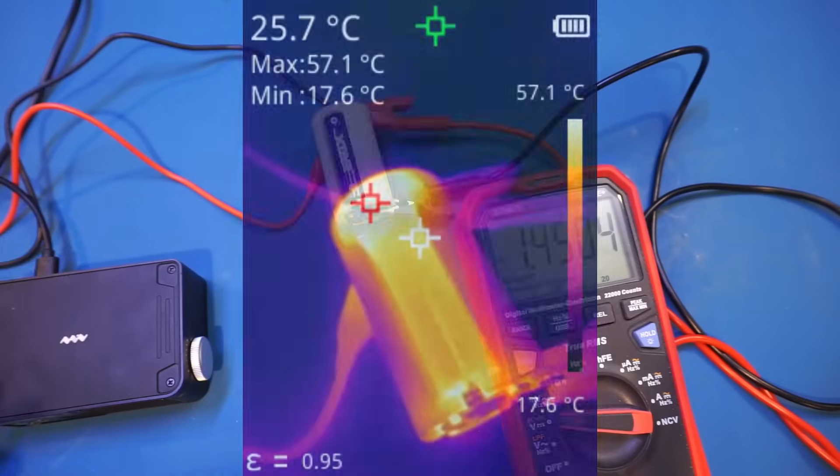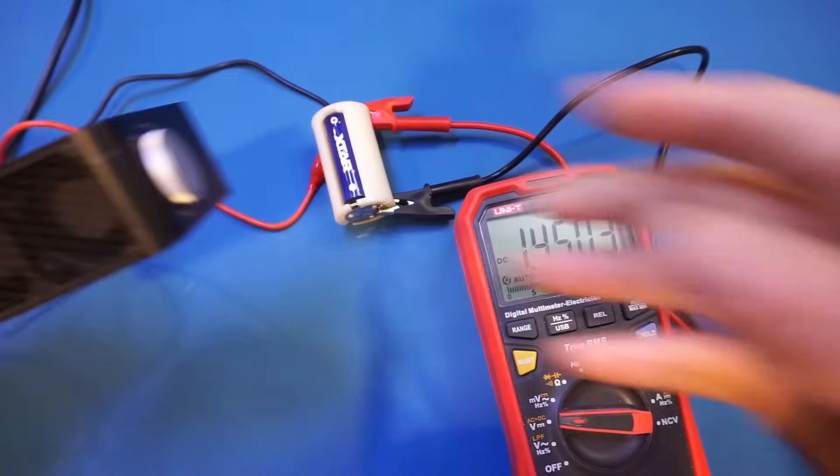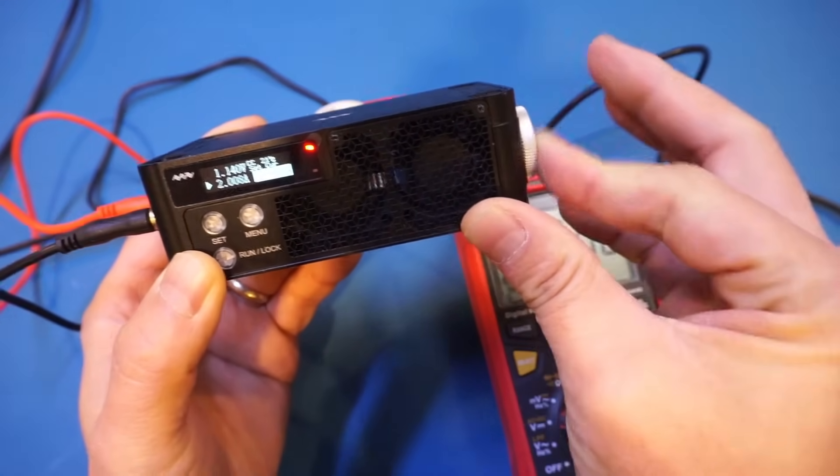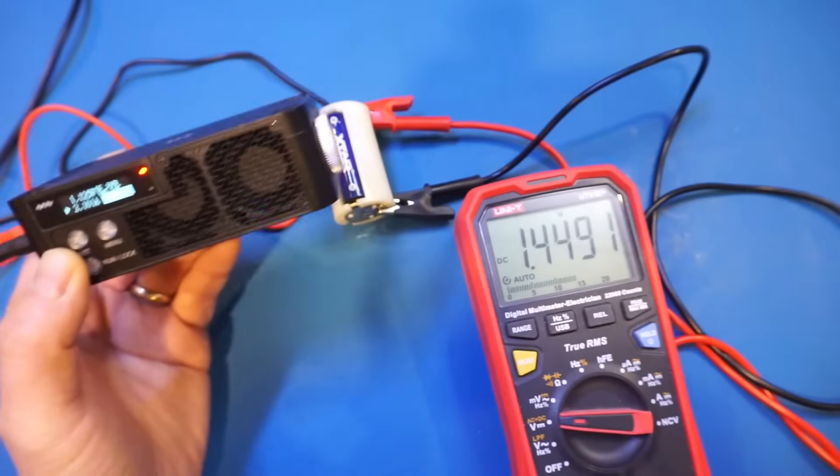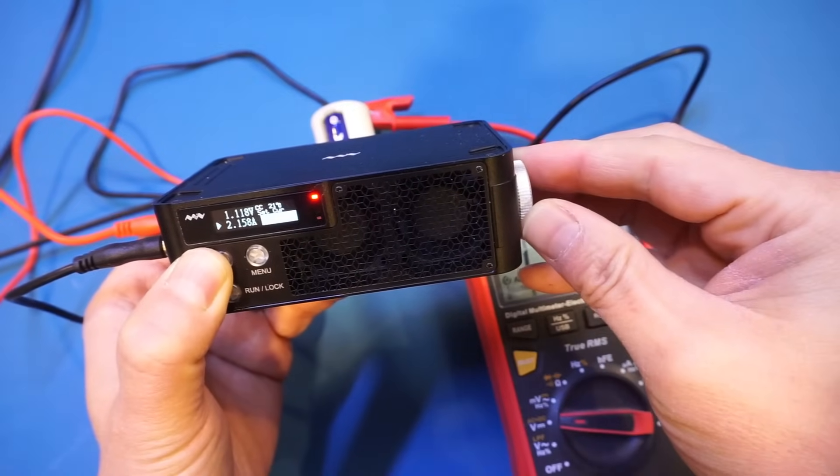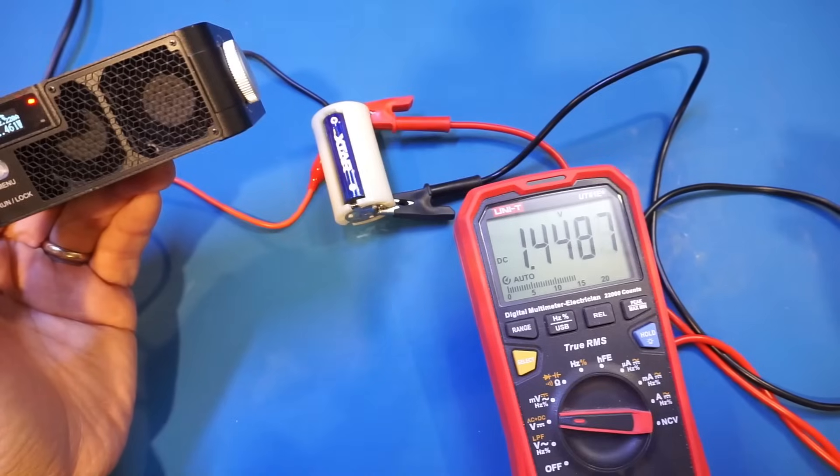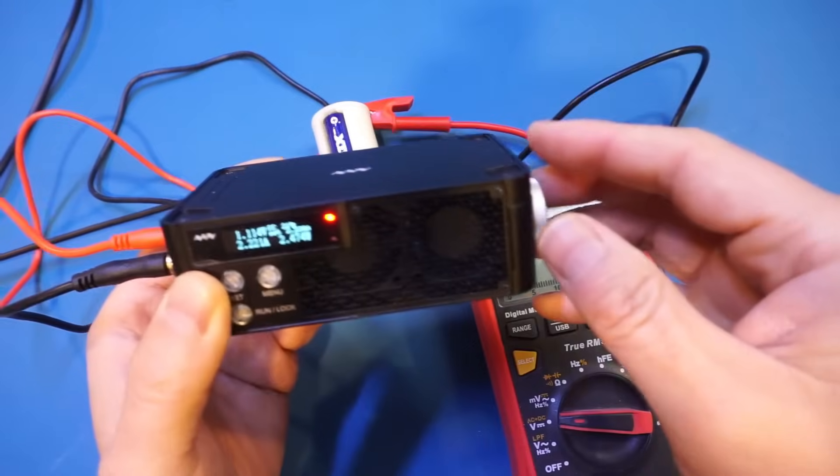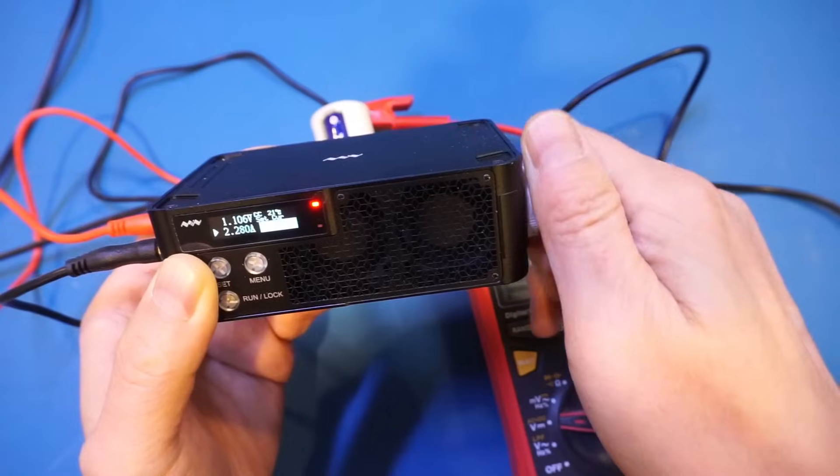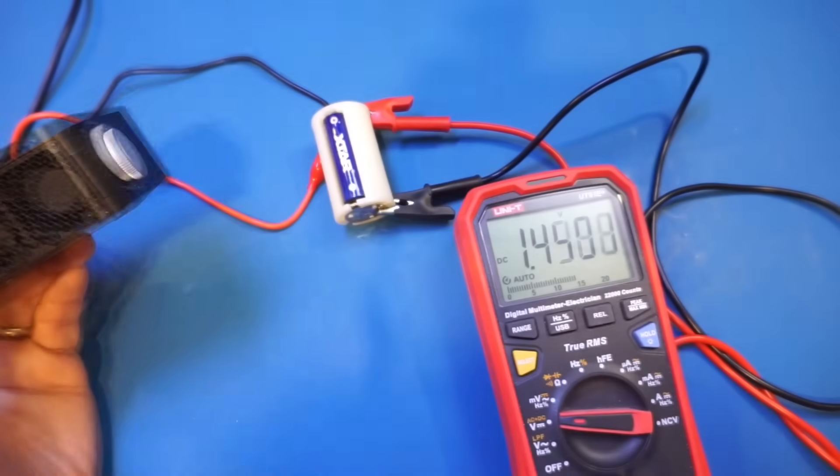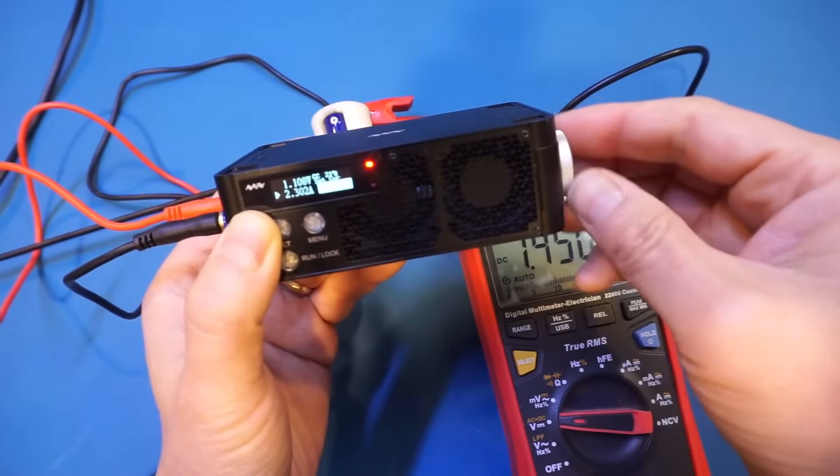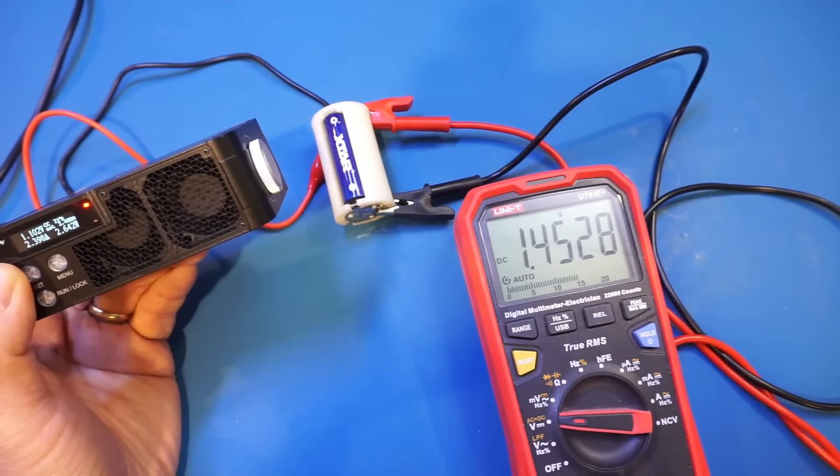Now let me keep increasing the current draw to see how far we can push the maximum here. So now we're at 2 amps. So let me increase the current to 2.1 amp. And it looks like we're still holding up. Let's increase it to 2.2 amps. And we're looking okay. Let's further increase it to 2.3. It looks okay. Let's do 2.4. It is still holding up.